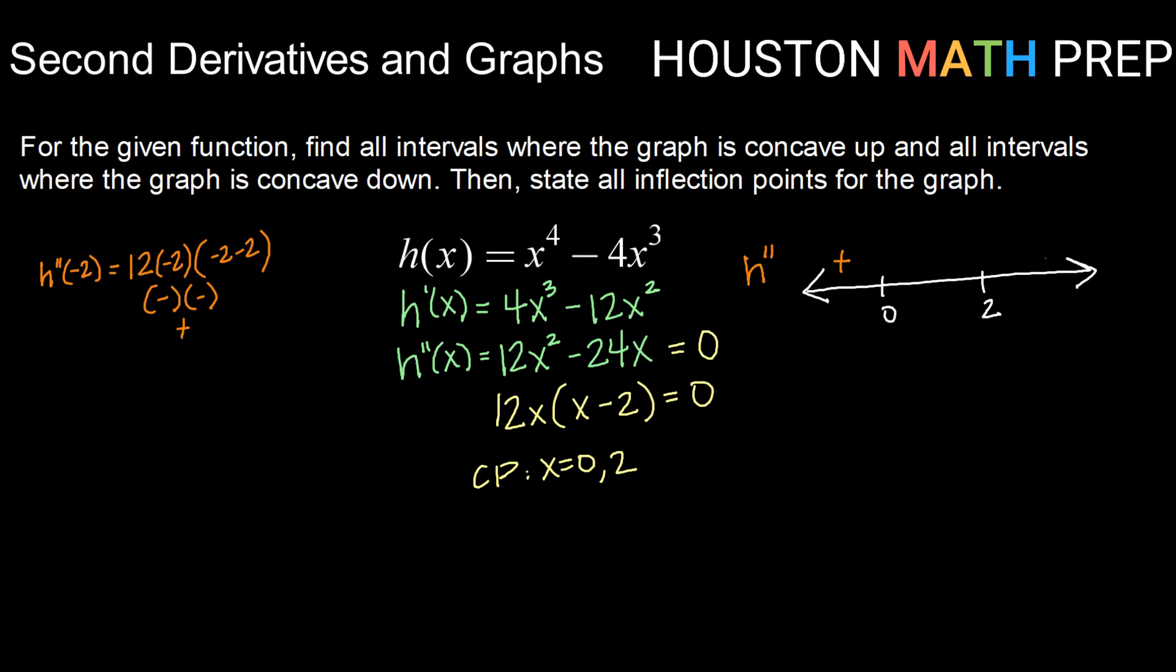I'm going to do the same thing for these other two intervals. So testing 1 or any value between 0 and 2, that is 12 times 1 times 1 minus 2, or a positive quantity times a negative quantity, which is overall a negative quantity.